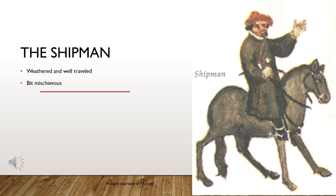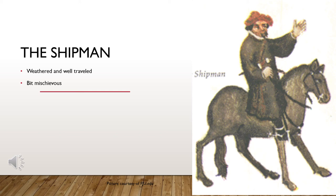This particular shipman is a bit mischievous and likes to steal wine from his captain while he's sleeping. The Plowman is basically a farmer and is actually the brother of the Parson from the clergy class. Like his brother, the Plowman is a good Christian with a good heart who works hard and pays his tithes to the church.